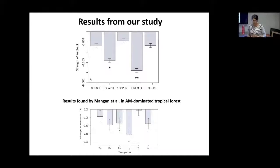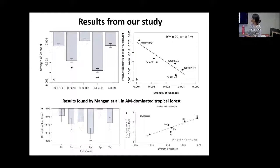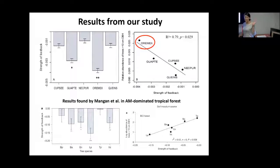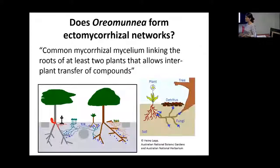The results were opposite to our expectations. We saw that Oremunia mexicana has the strongest negative plant-soil feedback — when grown on conspecific soil it has a very poor growth rate. Interestingly, we can see the same pattern found by Mangan in lowland tropical forests: when comparing species abundance in the forest against the strength of negative feedback, Oremunia was very strange — even though it has the strongest negative feedback, it has the highest abundance in the forest, and the species with the least negative feedback has the lowest abundance. So Oremunia was rejected — it does not show positive plant-soil feedback.